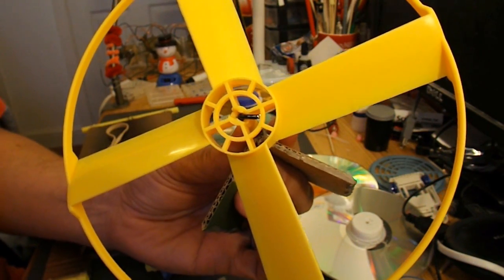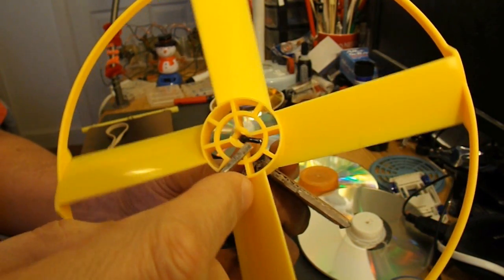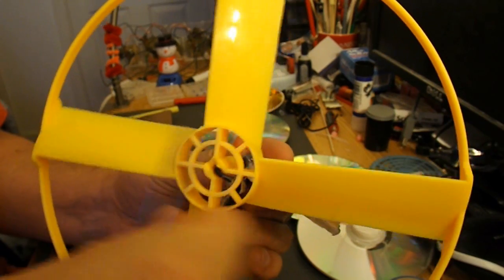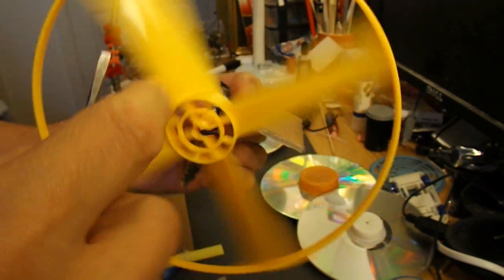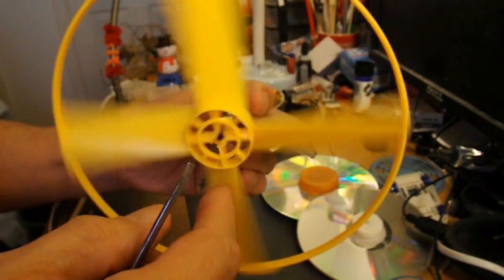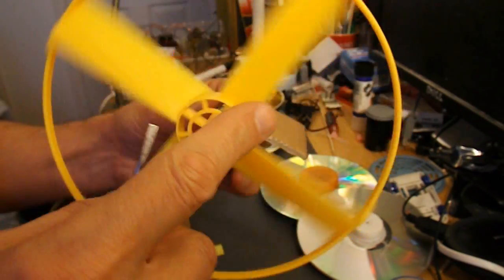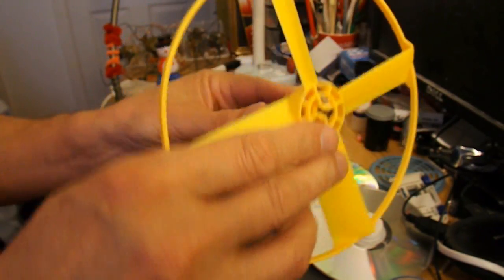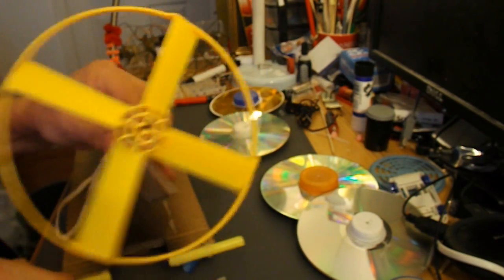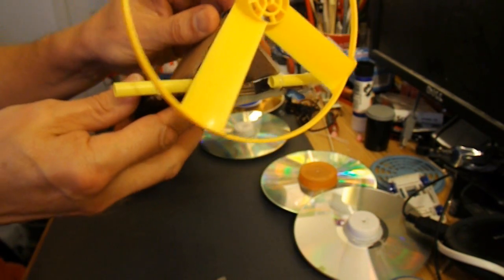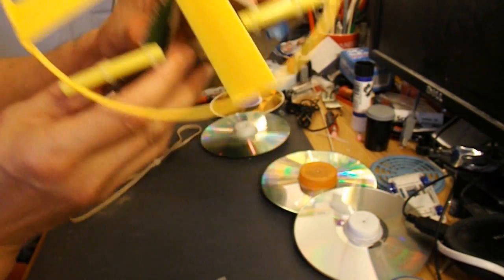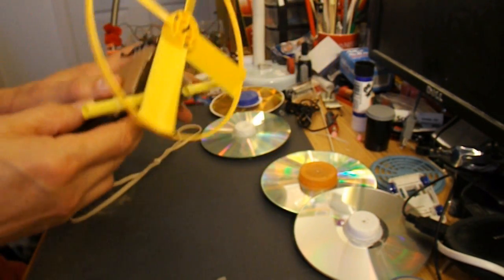I've bent the bicycle spoke over so it catches on the fan. So I'll now hot glue this onto the back of the car. Better make sure that we've got enough clearance for the fan blade.